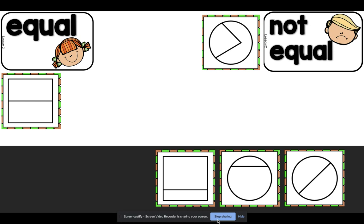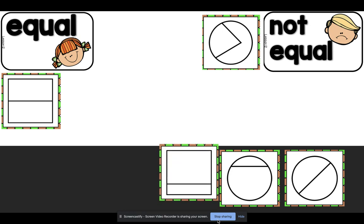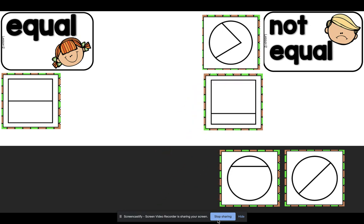What about the next square? Is that one equal or not equal? The two sides on this square are not the same, so they are not equal. It is not in half.